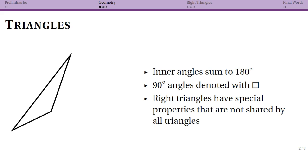The first thing that I want to start with are triangles. Note that here I have a triangle. One of the things that's true for all triangles, not just right triangles, is that the inner angles sum to 180 degrees, so if I know what two of the angles are I can find what the third angle is.